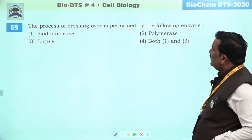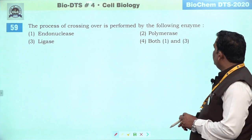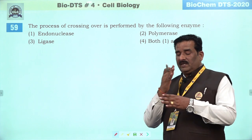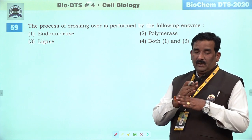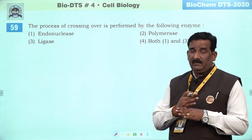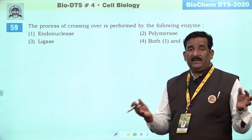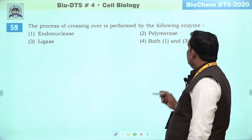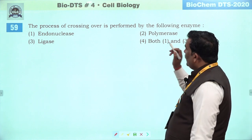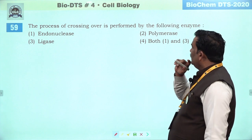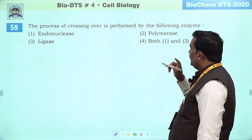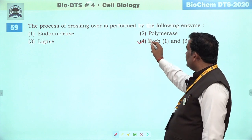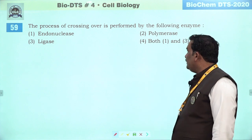Next question: the process of crossing over is performed by the following enzyme. Crossing over ka matlab hai ki DNA ko cut bhi hona hai aur DNA ko assemble bhi hona hai — both parental chromatids ke upar crossing over ke doran. Endonuclease break karega, ligase use assemble karega. Fourth is the right answer.